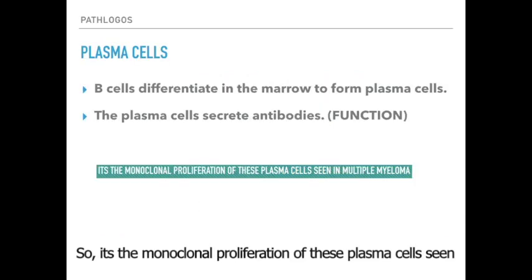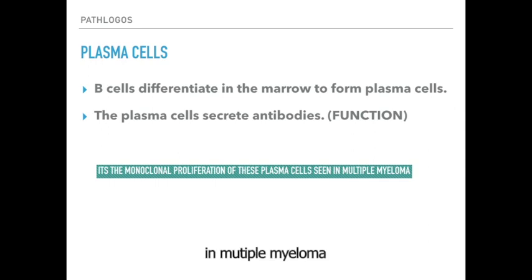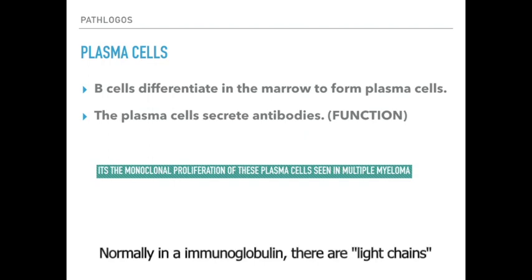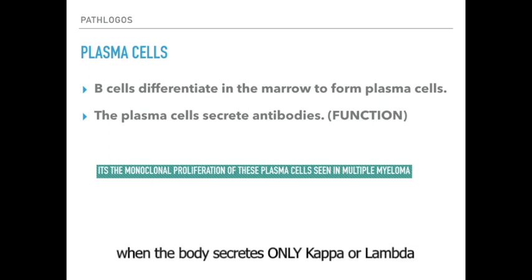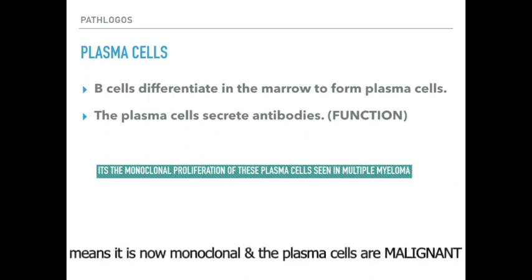It's the monoclonal proliferation of plasma cells seen in multiple myeloma. Now what is monoclonal? Normally in an immunoglobulin, there are light chains which have either Kappa or Lambda as the light chain. There is often a ratio maintained between the two. When the body secretes only Kappa or Lambda, it is now monoclonal and the plasma cells are malignant.